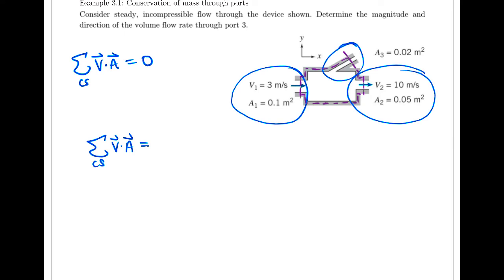Because this is our first example, I'll go through the dot product slowly here. So we look at control surface one, we see that the velocity vector is pointed inwards, but the normal to this area is pointed outwards. So therefore, it's negative V1 times A1.